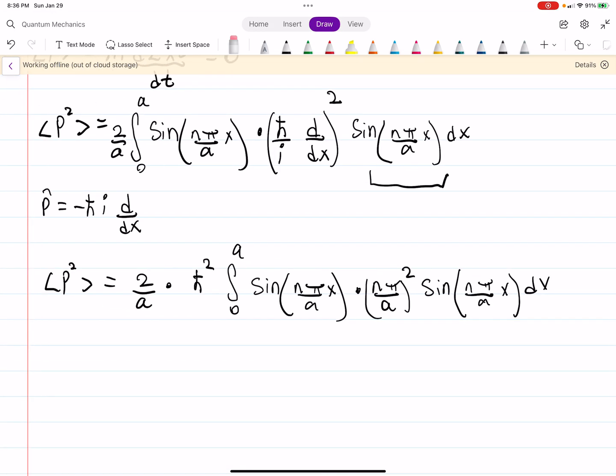So, now it's a lot easier. You can pull this out. And then you're just getting a sine squared. So, just for the interest of time, what you end up getting is that this is n pi h bar over a all squared.